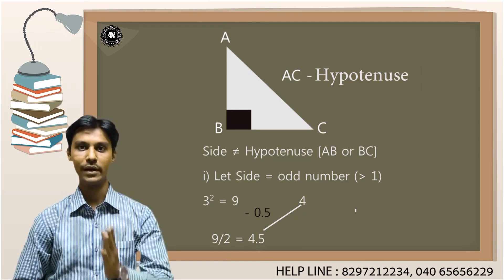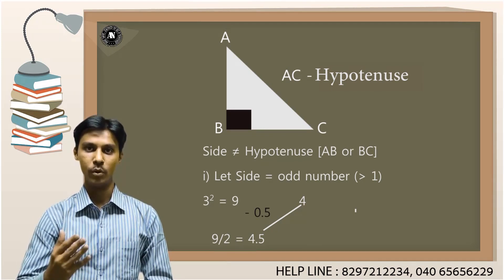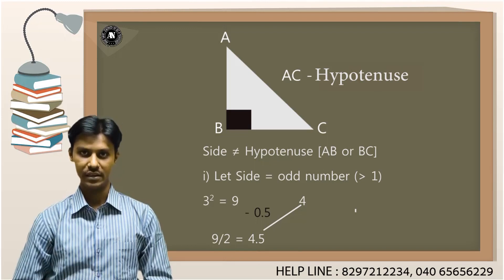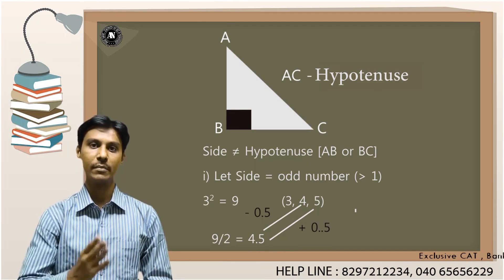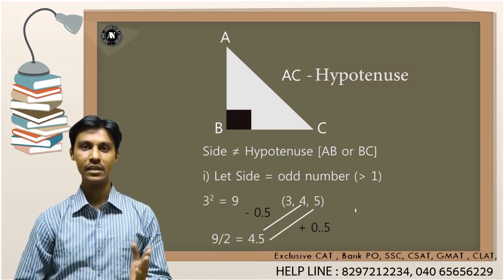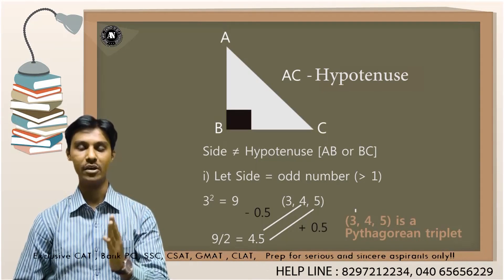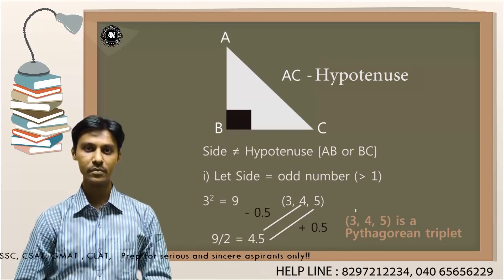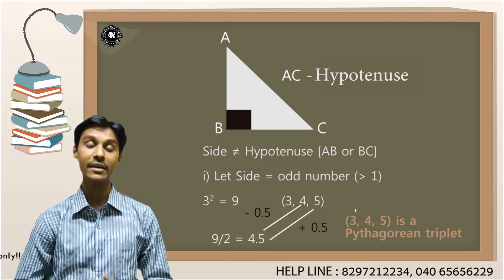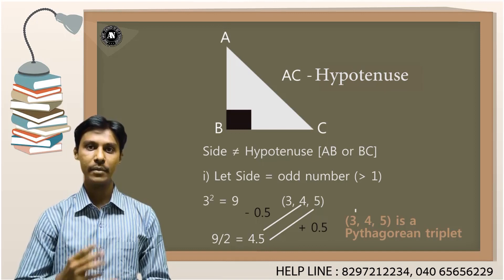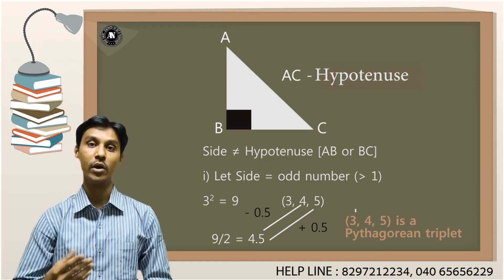So I have two numbers: 3 and 4 in the Pythagorean triplet. Similarly, with the same result of 4.5, I will add 0.5, so 4.5 plus 0.5 becomes 5. That is my third number in the Pythagorean triplet. Therefore, a series of the Pythagorean triplet is formed as 3, 4, 5 — where 3 is the number I took initially, 4 is calculated by squaring 3, dividing by 2, and subtracting 0.5, and 5 is calculated by squaring 3, dividing by 2, and adding 0.5.